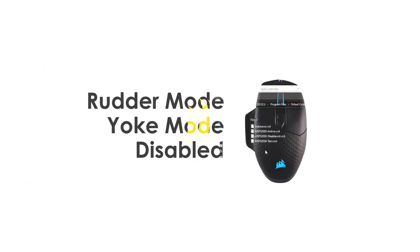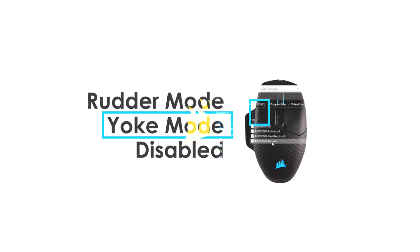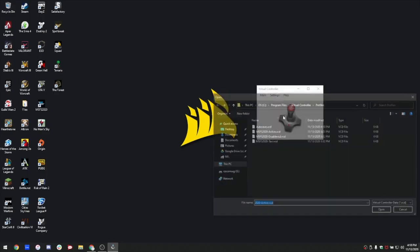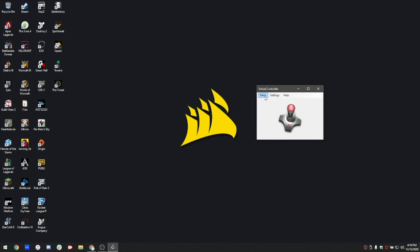There's rudder mode, which controls you on the ground and moves your rudders left and right with the mouse. Yoke mode, which controls the yoke just how you would expect. And then disabled, so you can still look around and do other things. It's really simple — go ahead and load up the active profile, hit run, and then launch Microsoft Flight Simulator.